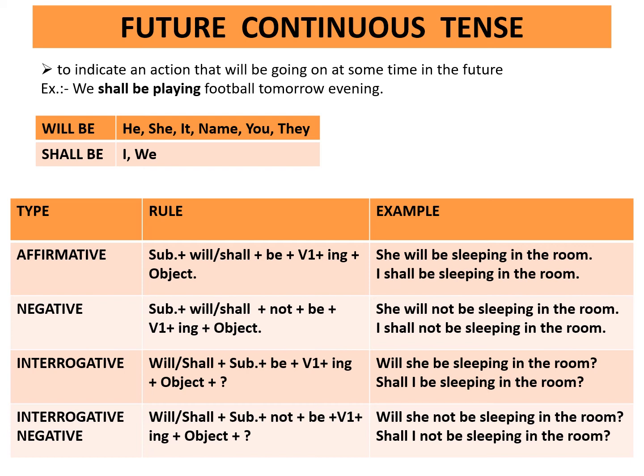Affirmative rule: subject plus will or shall plus be plus first form of the verb plus ing plus object. Example: She will be sleeping in the room. I shall be sleeping in the room. Negative rule: subject plus will or shall plus not plus be plus first form of the verb plus ing plus object. Example: She will not be sleeping in the room. I shall not be sleeping in the room.